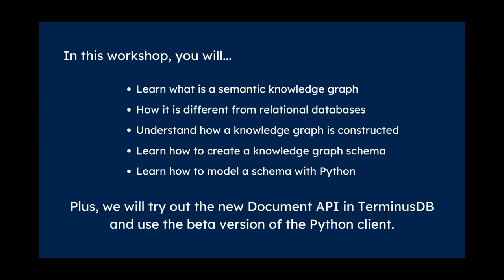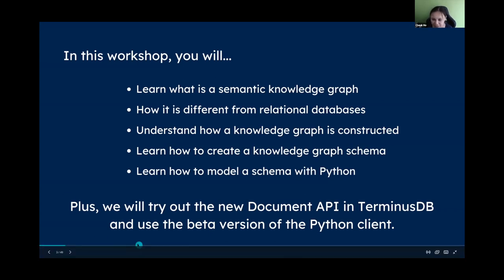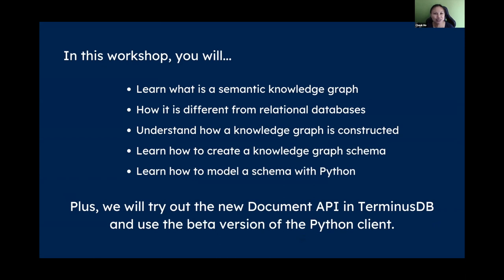TerminusDB has some history. Before, everything needed to be modeled in RDF format. But now we have a new thing called the document API, which makes modeling much easier. This document API is only available from version 10 onwards. Make sure the Docker image you get is at least version 10. The Python client should also be version 10 or above — they work together perfectly.